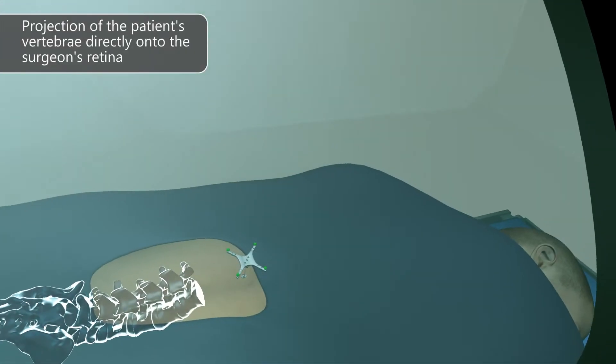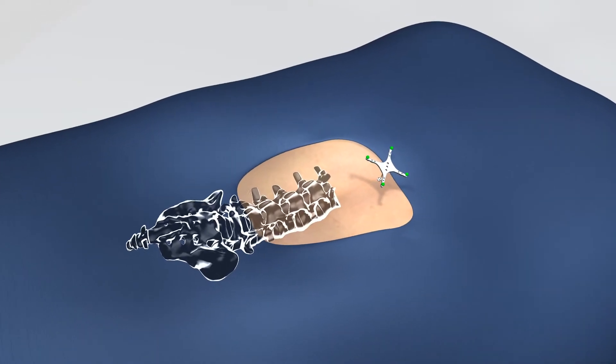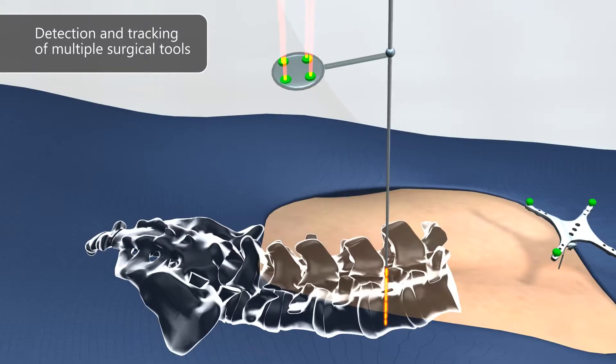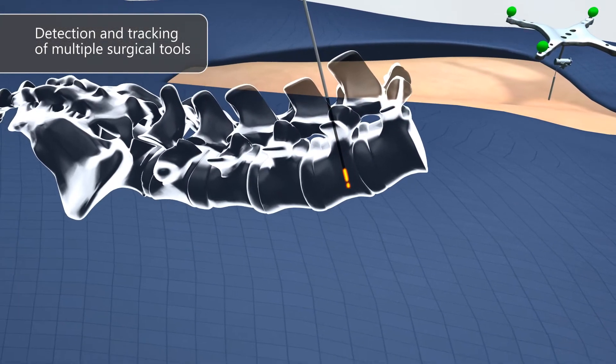The projection provides surgical precision with outstanding depth perception. The visor tracks the surgical tool and aligns it with the patient's 3D spine model to allow accurate drilling into the vertebrae.